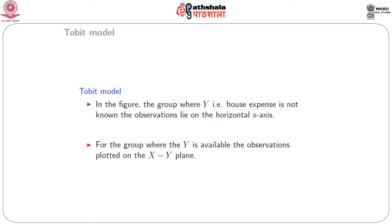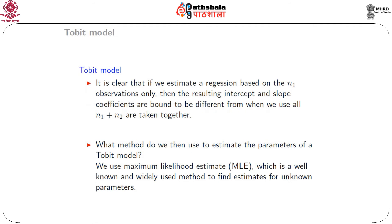From the figure, we can see that in the group where y is not observed (n₂ observations), they lie on the horizontal axis, while where y is observed, observations lie on the y-x plane. It is clear that estimating regression based on n₁ observations only will yield intercept and slope coefficients different from those obtained when n₁ and n₂ are taken together. Therefore, special care is needed when fitting a Tobit model.